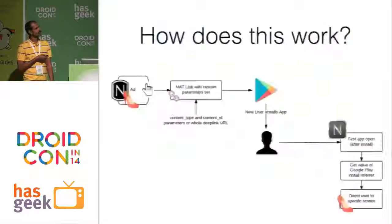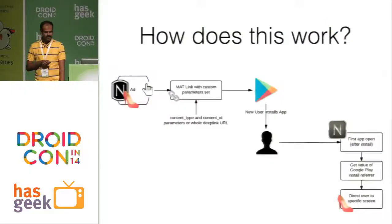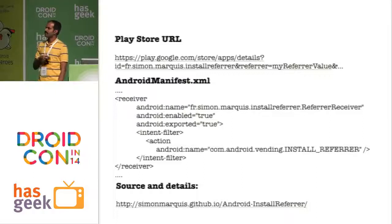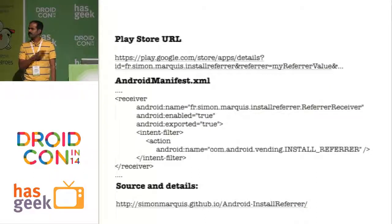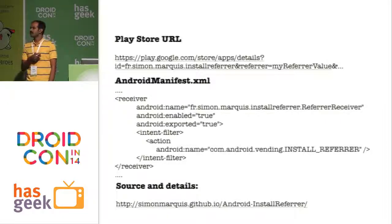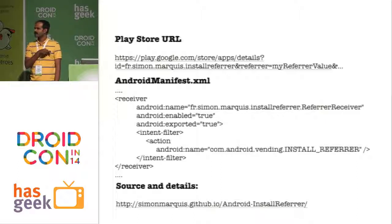How we do this deferred deep linking: with Google Play you have something called an install referral parameter. With every coupon link, along with the Google Play link, you give an install referral parameter. Once the user installs the app from Google Play, after installation is complete, Google Play sends a broadcast with the install referral parameter. Along with this parameter you get the coupon link, and you handle it in your app's broadcast receiver to take the user to the corresponding page. There is a GitHub link where complete sample code for how the install referrer works is posted.